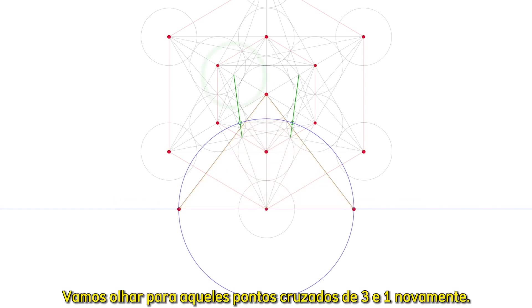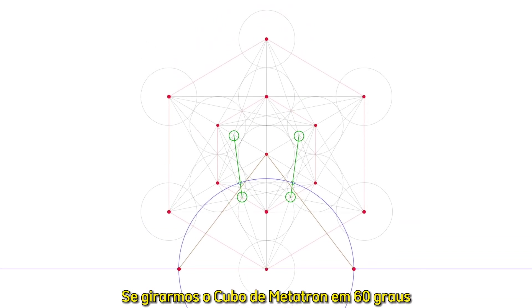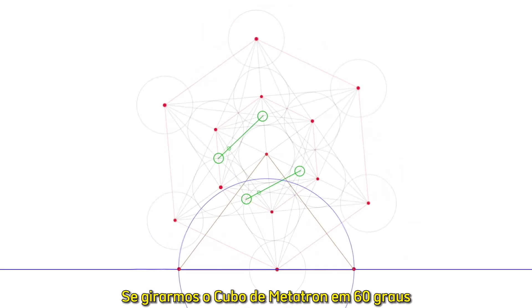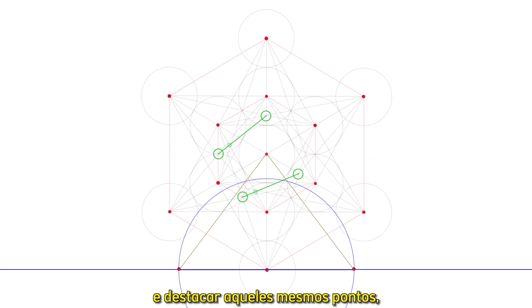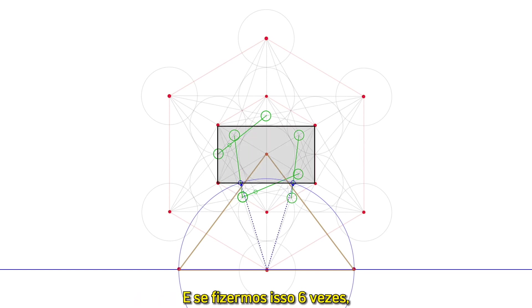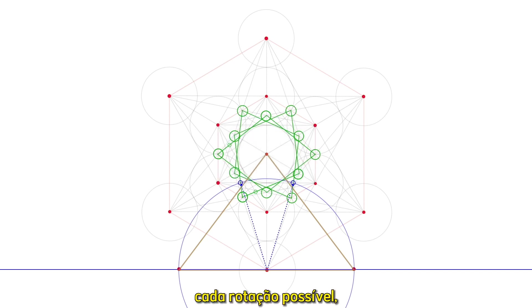Let's look at those three-in-one cross points again. If we rotate Metatron's cube sixty degrees and highlight those same points, now in new positions, we see that one of them is a duplicate of one of the former, producing the same cross points in a different view of the grid. And if we do this six times, every possible rotation, we find they all are duplicates of each other.